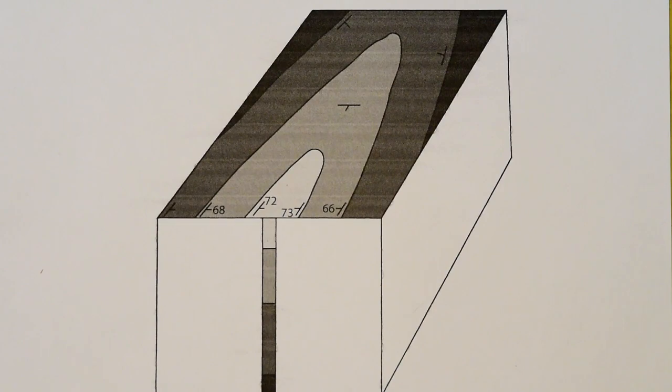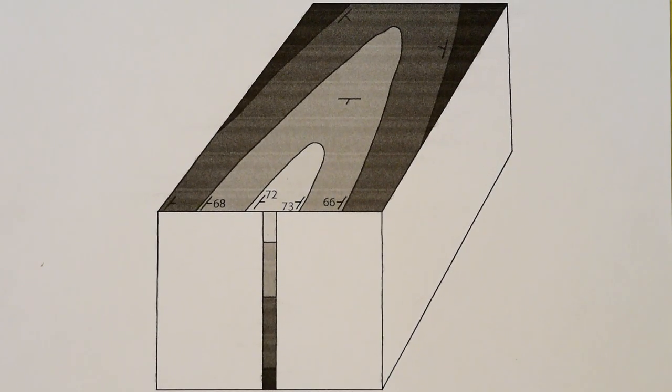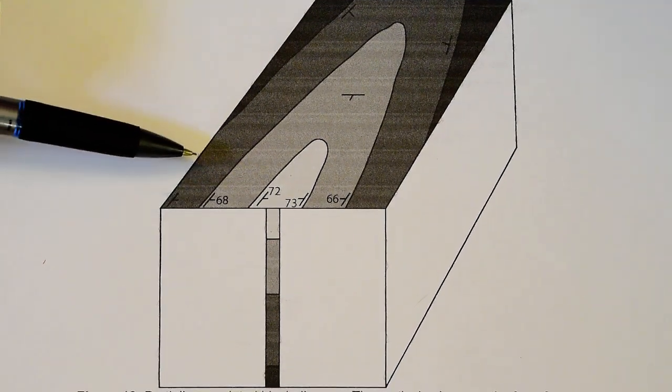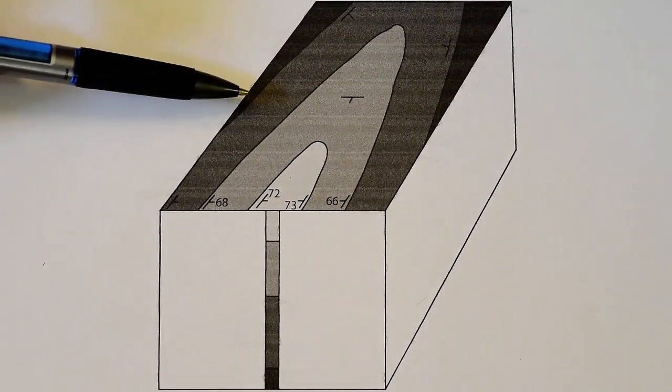Okay, so we're going to be moving on to problem number seven. In problem number seven, you're given this blank or mostly blank block diagram.